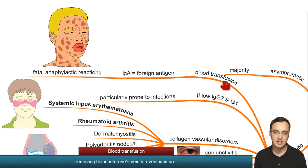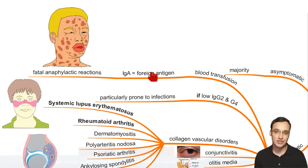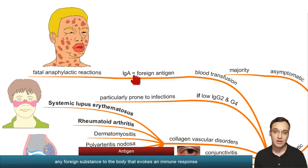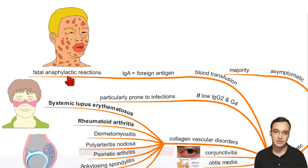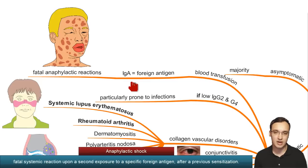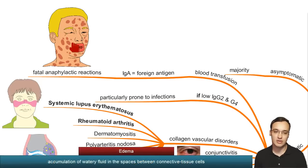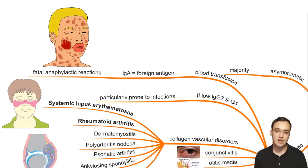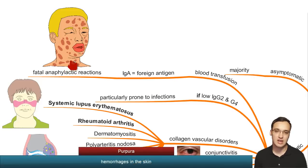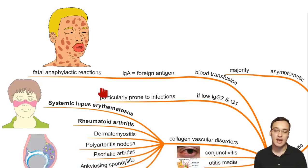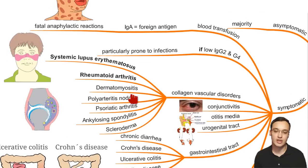One symptom occurs when getting a blood transfusion: foreign IgA antigen entering the body causes an anaphylactic reaction, because we don't have IgA in our body so it is treated as a foreign intruder by our immune system. This can be a fatal anaphylactic reaction. You can see this in a patient who has edema around the eyes and mouth, and a reddish purpura indicating blood under the skin — a fatal condition.